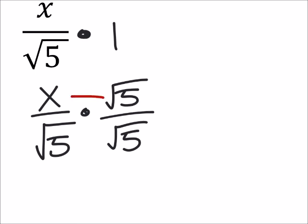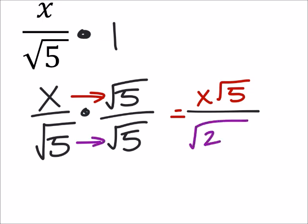Well, in the numerator, I would multiply the numerators, and I would get x times the square root of 5. And this would be over the square root of 5 times the square root of 5, which is the square root of 25. And the square root of 25 is 5.